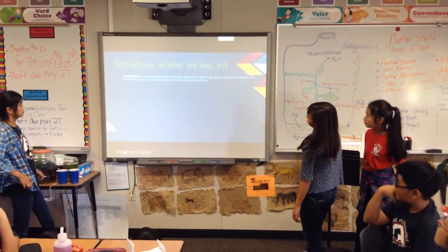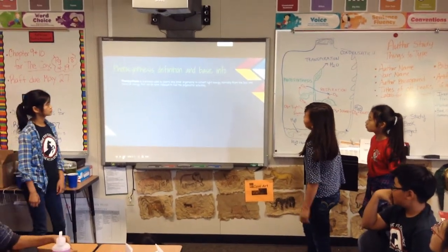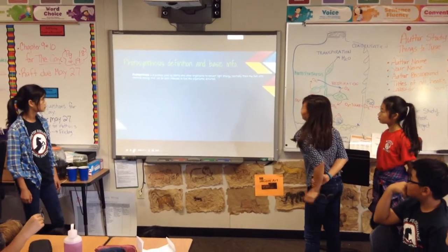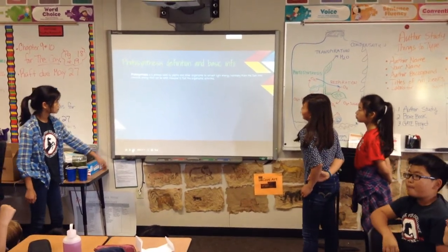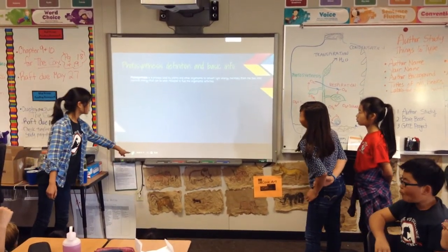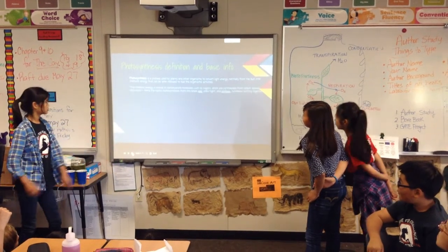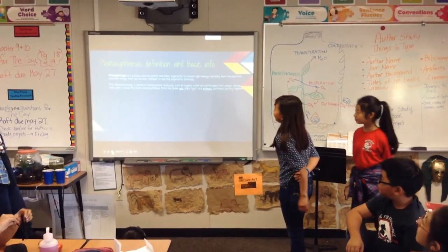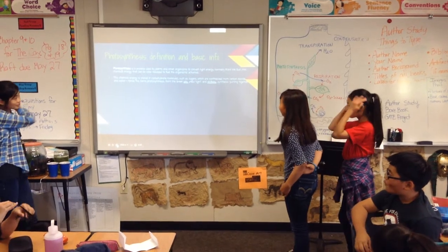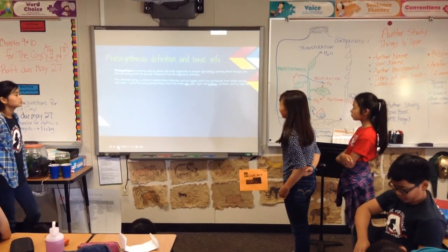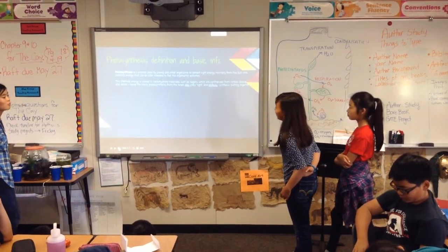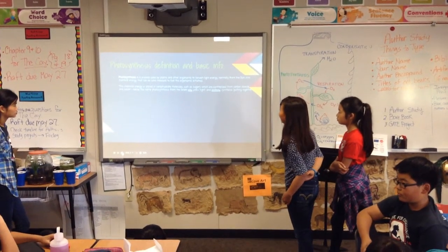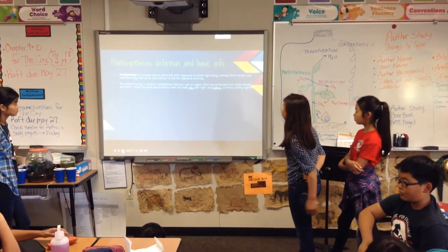Photosynthesis is a process used by plants and other organisms to convert light energy, normally from the sun, into chemical energy that can be later released to fuel the organisms' activity. This chemical energy is stored in carbohydrate molecules and sugar, which is synthesized from carbon dioxide and water. Hence, the name photosynthesis, from the Greek: photos meaning light, and synthesis meaning putting together.